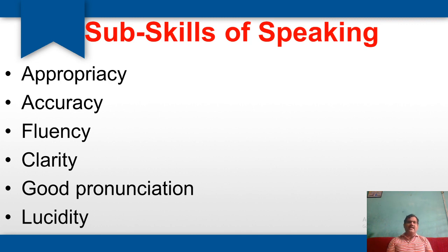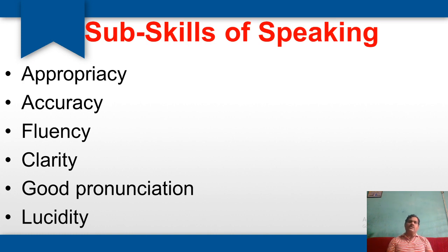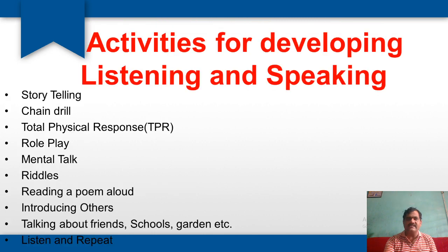The sub-skills of speaking are: appropriation, accuracy, fluency, clarity, good pronunciation, and lucidity. Good pronunciation can be developed — the student can pronounce properly, using the rising tone and falling tone. In a comprehensive manner, the student can speak and give accuracy and correctness in speaking. The student should also maintain fluency, and there should be highest clarity in speaking. These sub-skills must be developed among our learners.